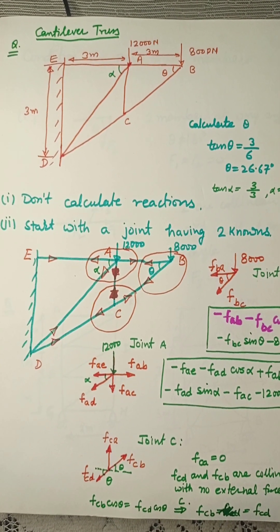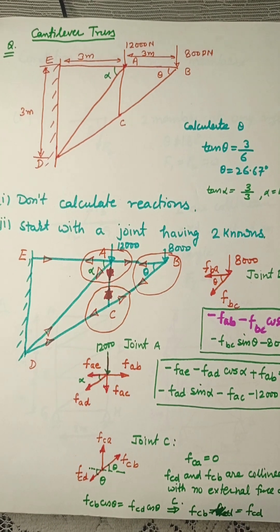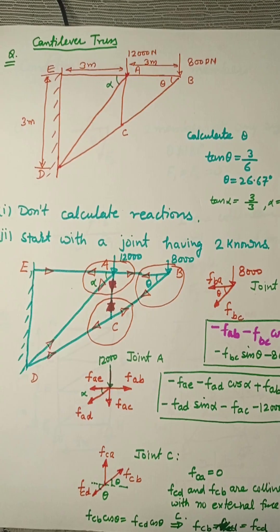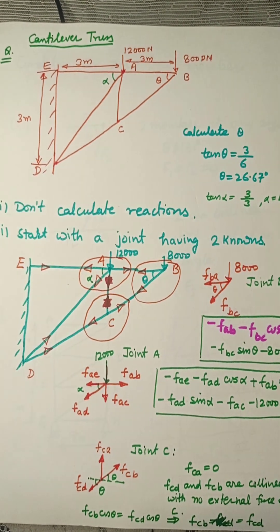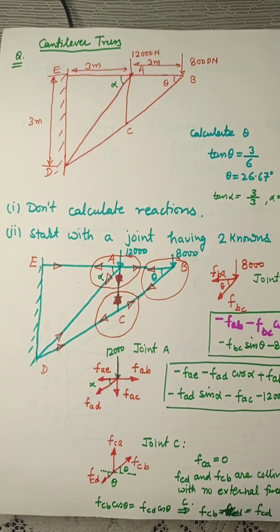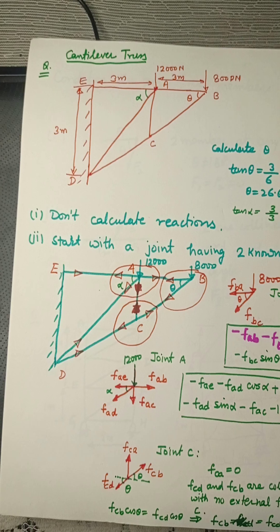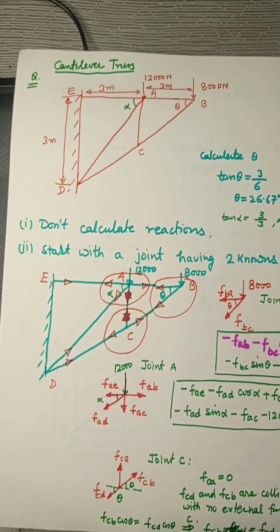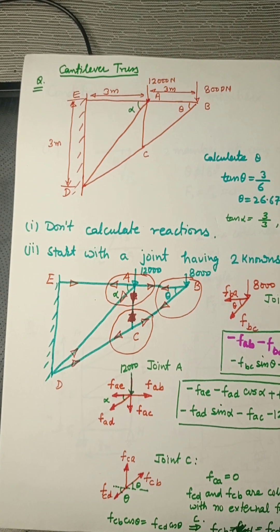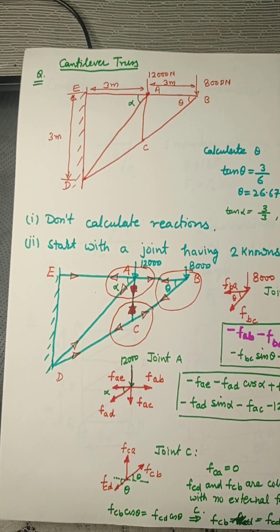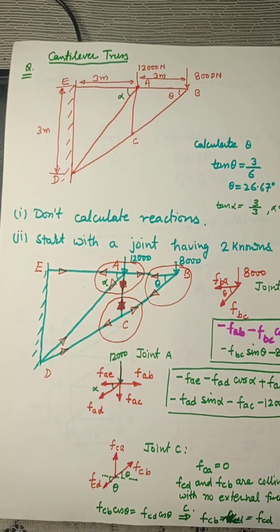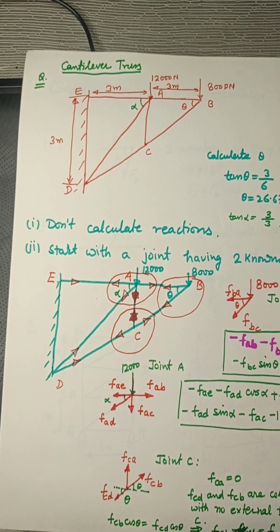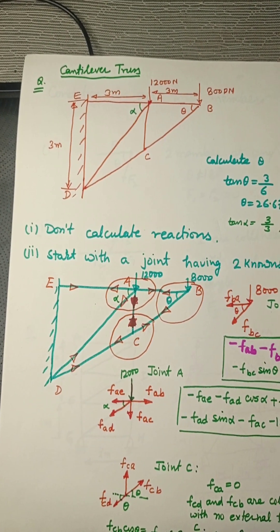First, using method of joints, then I will tell you how you can implement method of sections in this truss. The very first step in solving a truss is to calculate support reactions — but it is not needed here. That is an undesirable action; it will lead to more confusion. So what is recommended is: don't do step one.